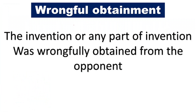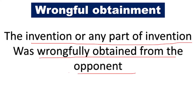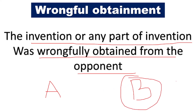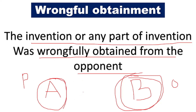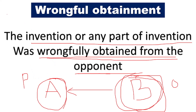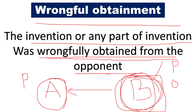The first ground is wrongful obtainment — the invention or any part of the invention was wrongfully obtained from the opponent. For example, there is a person A and a person B. B is the person who is opposing the patent of A. A is the patentee. What happens is B would have actually invented it, and A has obtained it from B unknowingly. So A has obtained it from the opponent, and therefore B can put forward a pre-grant opposition.